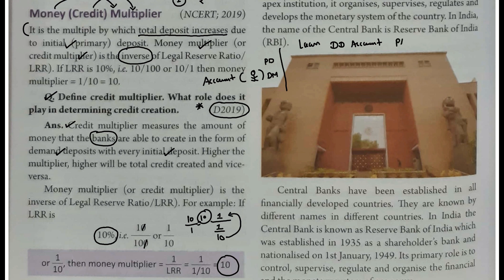Baad mein bank ko us principal amount par byaaj milega. Yeh byaaj ki raqam zyada hogi, aur isme se kuch hissa is person ko diya jaega jisne bank par trust karke yahan khata khulwaya, unke deposit ke aadhar par. Higher the multiplier, higher will be total credit created, aur vice versa. Multiple stages, multiple phases par bank profit banta hai - total credit creation bank's profit making ka hissa hai.